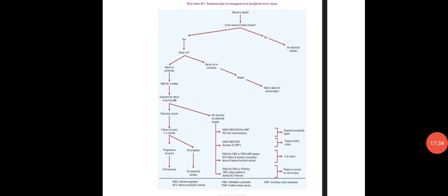Terminology: EMG means electromyography; NCV means nerve conduction velocity; FIBS means fibrillation potentials; PSW means positive sharp waves; VMPs means voluntary motor potentials.